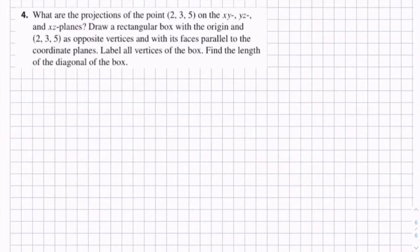Draw a rectangular box with the origin and 2, 3, 5 as opposite vertices and with its faces parallel to the coordinate planes. Label all vertices of the box. Find the length of the diagonal of the box.